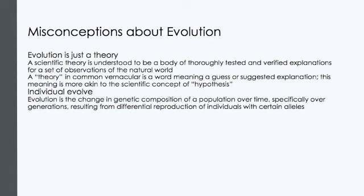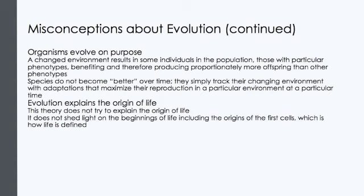We will now discuss some misconceptions about evolution. One is that evolution is just a theory. A scientific theory is understood to be a body of thoroughly tested and verified explanations for a set of observations of the natural world. A theory in common vernacular is a word meaning a guess or suggested explanation — this meaning is more akin to the scientific concept of hypothesis. Also, the idea that individuals evolve is a misconception. What you have to understand about evolution is that evolution occurs on a population-wide scale. Evolution is the change in genetic composition of a population over time, specifically over generations, and this results from differential reproduction of individuals with certain alleles.